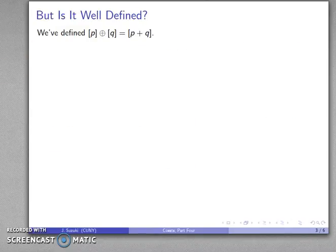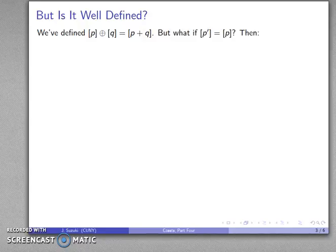Well, not quite. So remember, any time we try to define a binary operation on equivalence classes, we do have to worry that we have something that is not well defined. So I've defined coset plus coset to equal this, but what happens if I have a different representative for the same coset? Well, then first of all, when I do that coset sum,